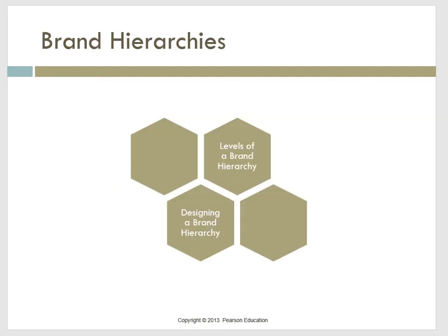Brand hierarchy is a useful means of graphically portraying a firm's branding strategy by displaying the number and nature of common and distinctive brand elements across the firm's products, revealing their explicit ordering. We can brand a product in different ways depending on how many new and existing brand elements we use. From top to bottom: corporate brand, family brand, individual brand, a modifier, a designating item or model, and a product description.